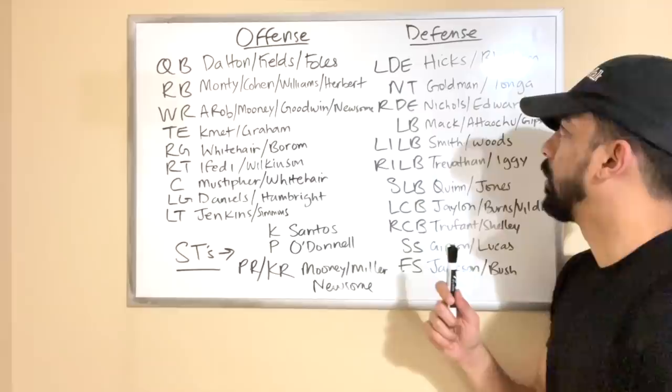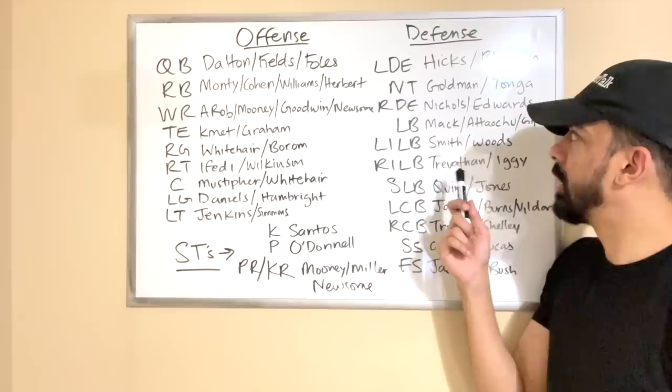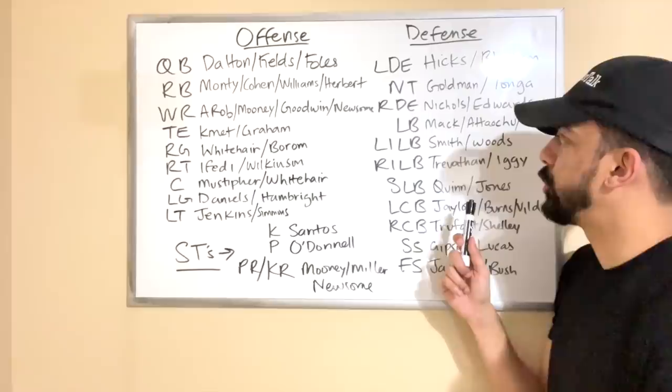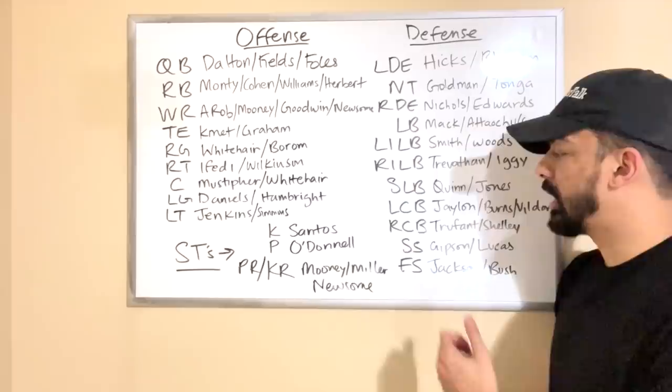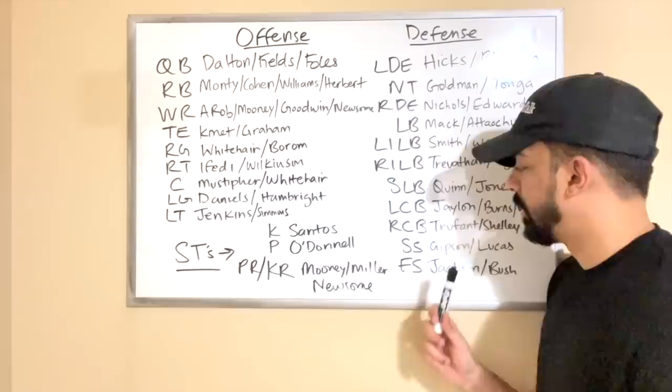At the linebacking core: stud pass rusher Khalil Mack, Jeremiah Attaochu picked up in free agency from the Broncos, and then Trevis Gibson who was a rookie last year. Good depth there. Obviously Roquan Smith, Danny Trevathan, and Robert Quinn are our studs. At corner: Jaylon Johnson at one spot, and Desmond Trufant who we signed in the offseason at the other corner spot.